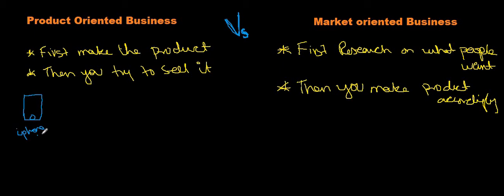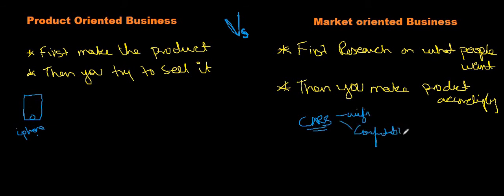On the other hand, the new models which are coming out are actually market-oriented — you do research in the market and find out what people want. For example, cars: people want Wi-Fi in the car, people want comfortable seats. You do research, find out what people want, and plan accordingly. These are normally high-technology products.